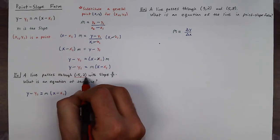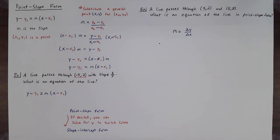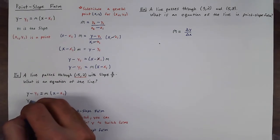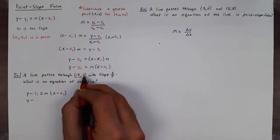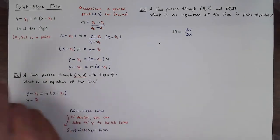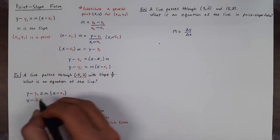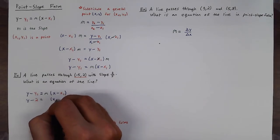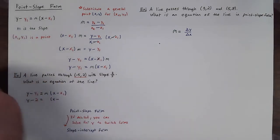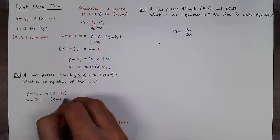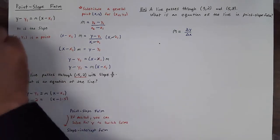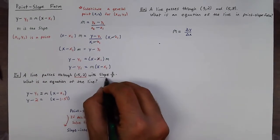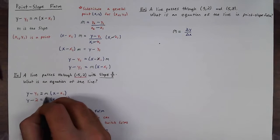So we know our point is negative five, two. So when I go to plug into my equation I get y minus y1, which in this case is positive two, is equal to m, which we'll come back to in just a second, times x minus x1, which in this case is going to be negative five.